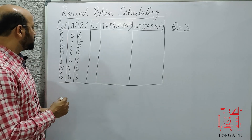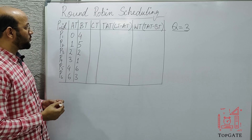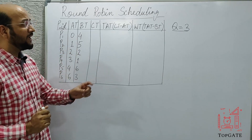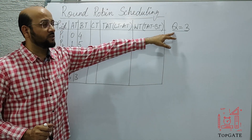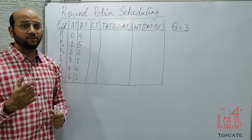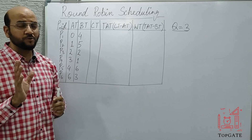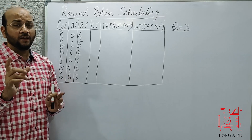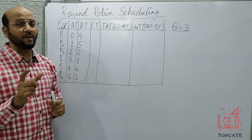In this example we have six processes P1 to P6, and for those processes we have been given the arrival times and the burst times. The time quantum given is 3. That means a process cannot execute for more than three time units in a single iteration, irrespective of its burst time — the process cannot execute for more than three time units in a single iteration.